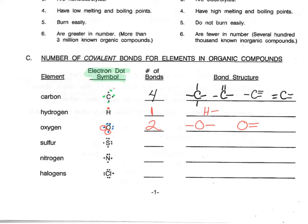Now, what do you get for sulfur? Why don't you try it? Well, since sulfur is in the same family as oxygen, we see that there are six dots, which leaves two of them single, giving us two bonds with two options: either both bonds going in opposite directions, or both going the same way for a double bond.